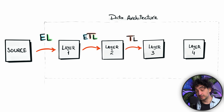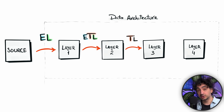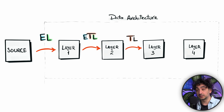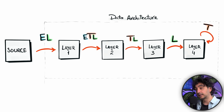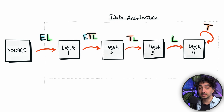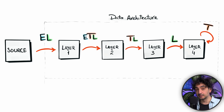Between layer two and layer three, you might do only transformation and load — no extraction needed, since it uses the same technology and you take all data from layer two. Between layer three and four, you might use only the Load, such as duplicating or replicating data. The point is: when moving from source to target, you don't always need the complete ETL — depending on your data architecture design, you might use only a few components.